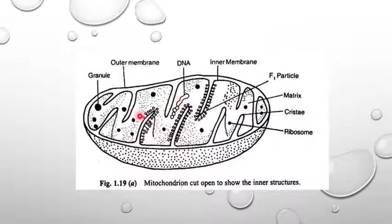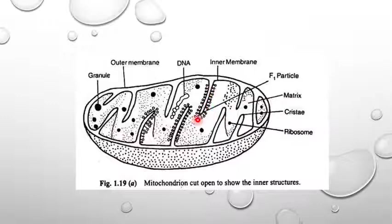Mitochondria have granules and their own ribosomes. On the cristae there are particles known as oxysomes, which also help in ATP synthesis.